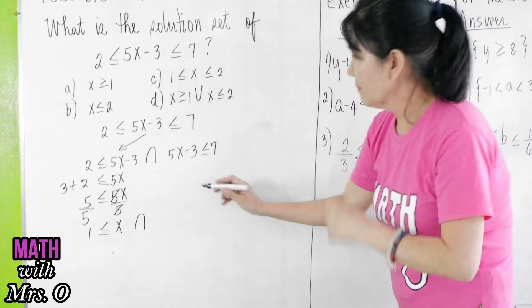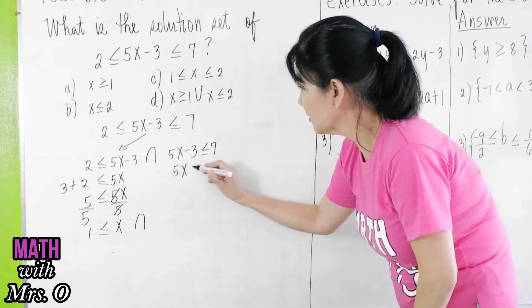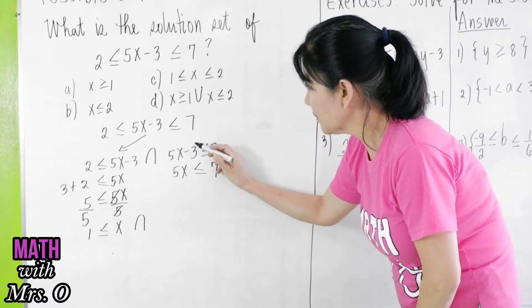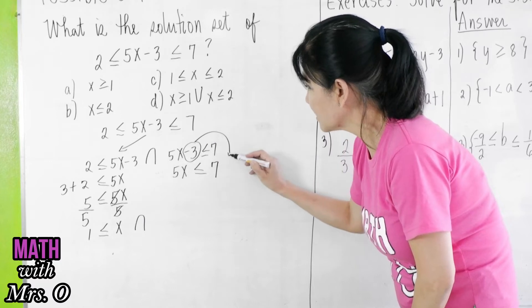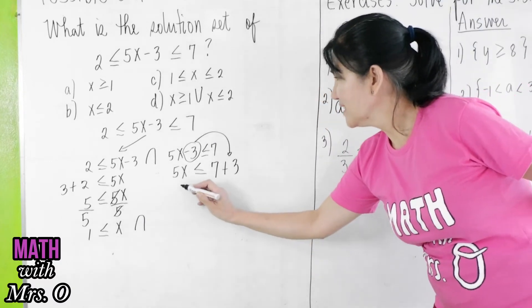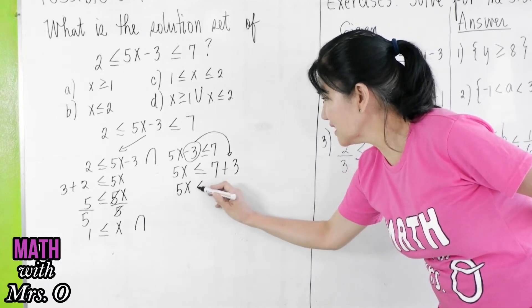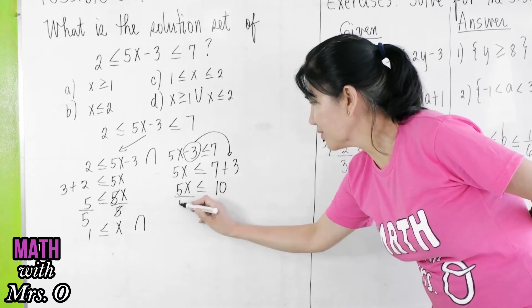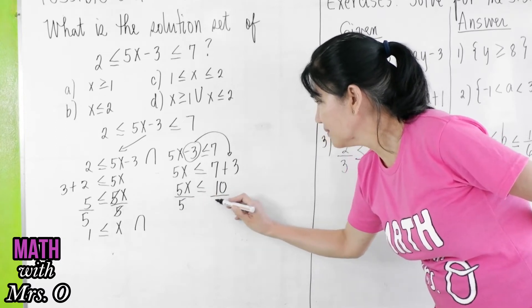Intersection, solve for x again here on this side. You transpose negative 3 to the other side, so it becomes positive 3. So here, 5x is less than or equal to 10. You can divide both sides by 5.